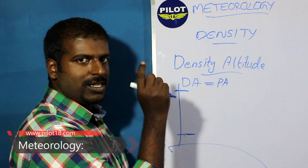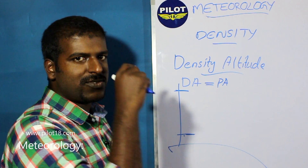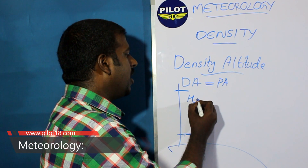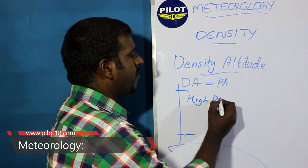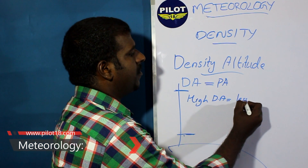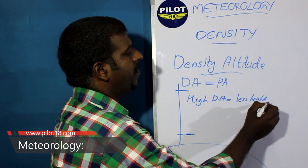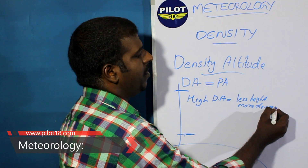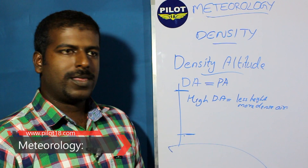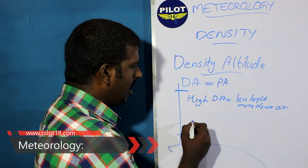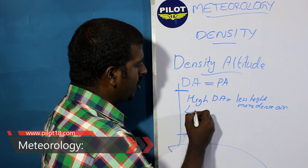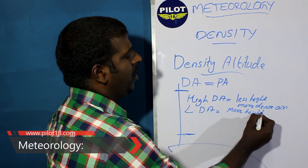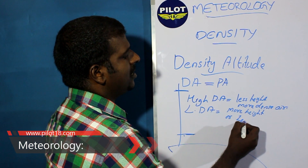In the term 'density altitude', preference should be given to the height aspect. So high density altitude equals less height or more dense air. Likewise, less density altitude equals more height or less density.